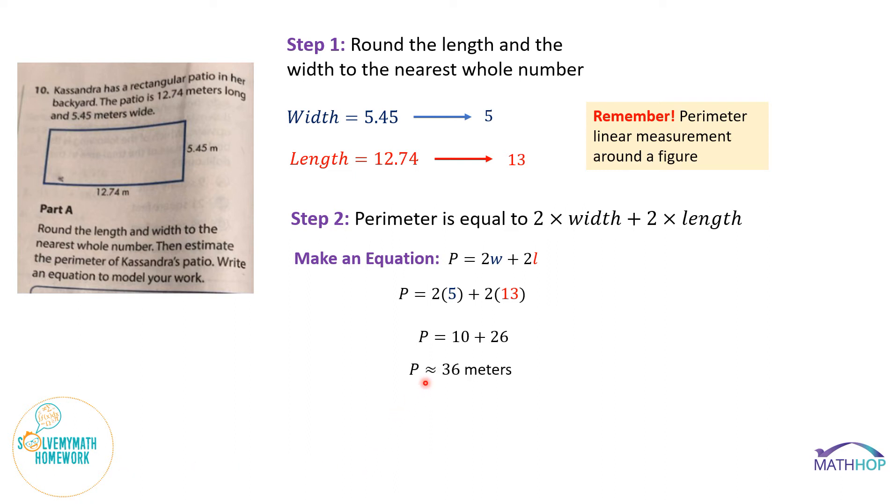Remember, once we rounded, we weren't calculating exact perimeter. So we use this squiggly equal sign to say approximately. We've rounded values here. This is not an exact measurement. And remember, don't leave off meters from your answer. This was in units of meters in our problem. So our answer must contain the same units. You can't just have a naked number with no units. So our perimeter is 36 meters.